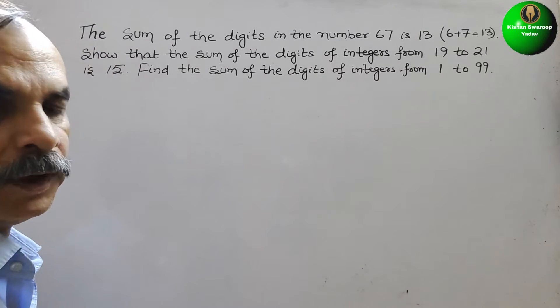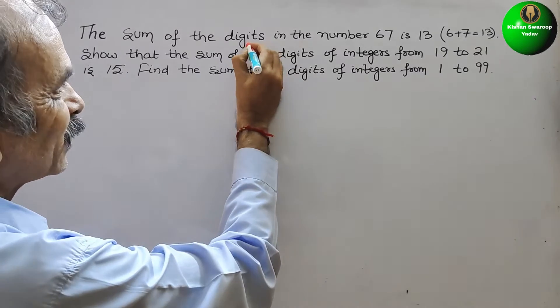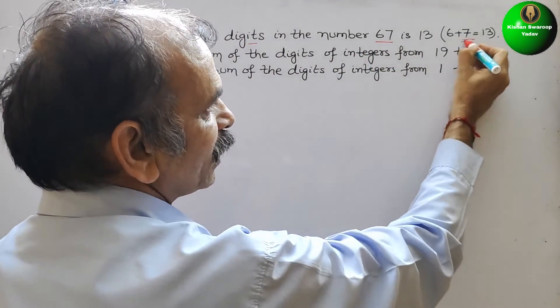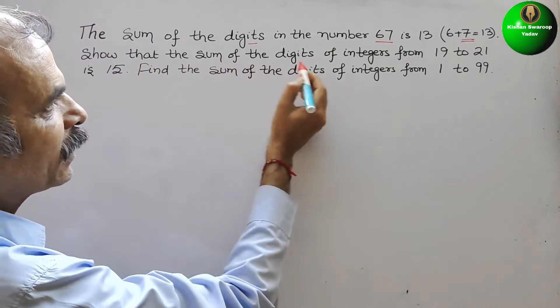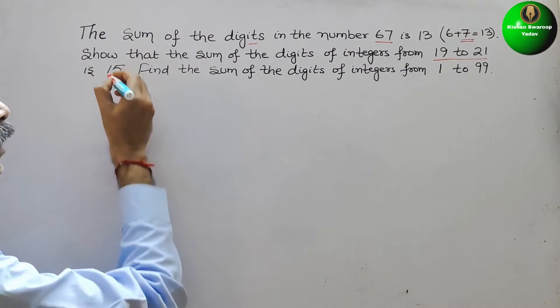Now, how do we have to do this? Here they have given 2 digits, 67. 6 plus 7 is 13. Next they have told we have to show that the sum of the digits from 19 to 21 is 15.